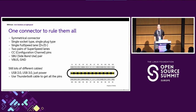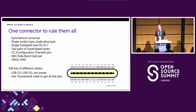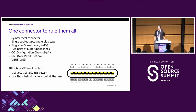USB-C got four SuperSpeed lanes compared to USB 3's two — two to transmit, two to receive. Power delivery messaging moved to separate Configuration Channel pins, CC1 and CC2, rather than mixing voltage and messaging on VBus. And there are two more pins to send additional messages — that's the Sideband Use, SBU pins.